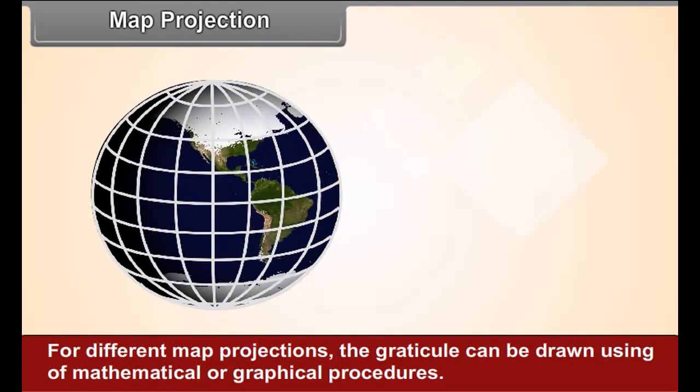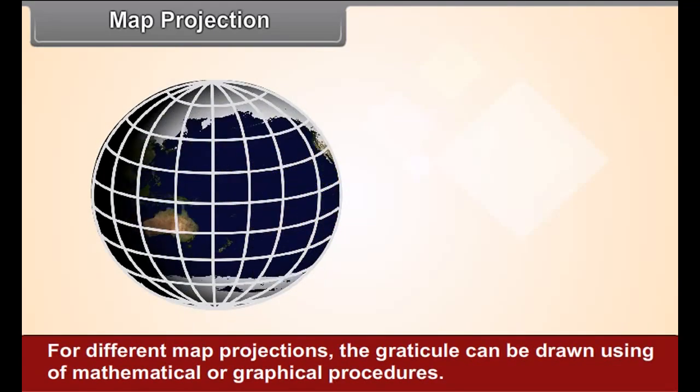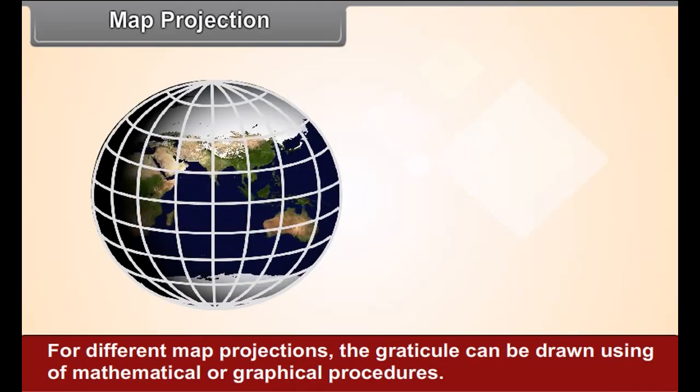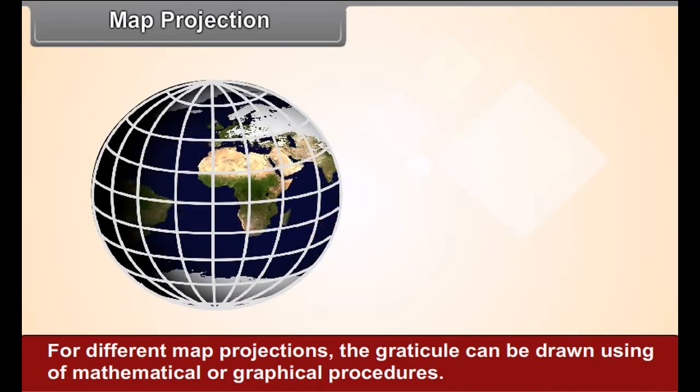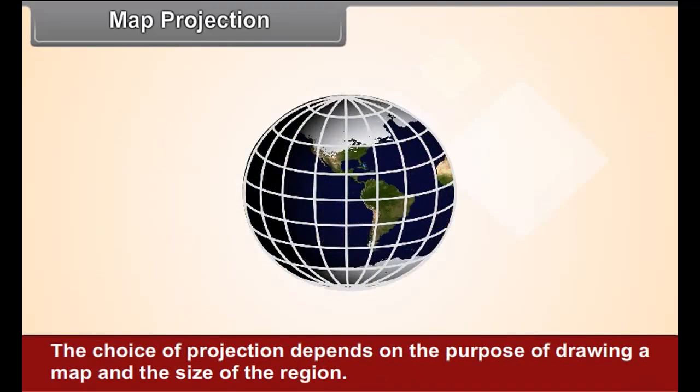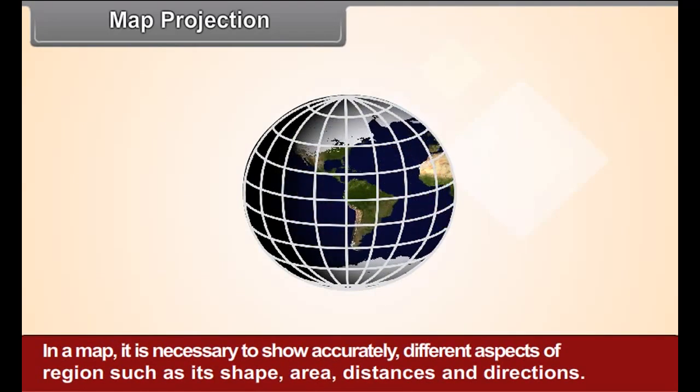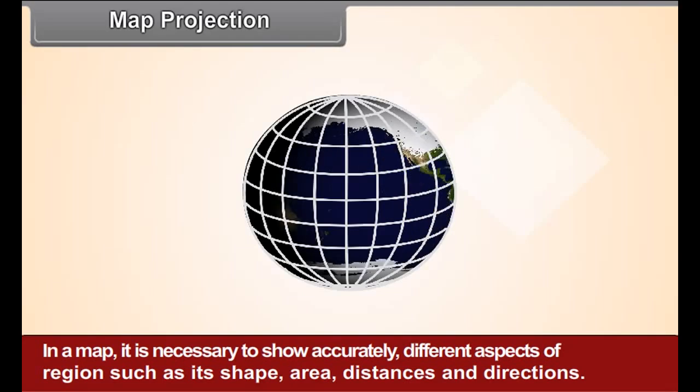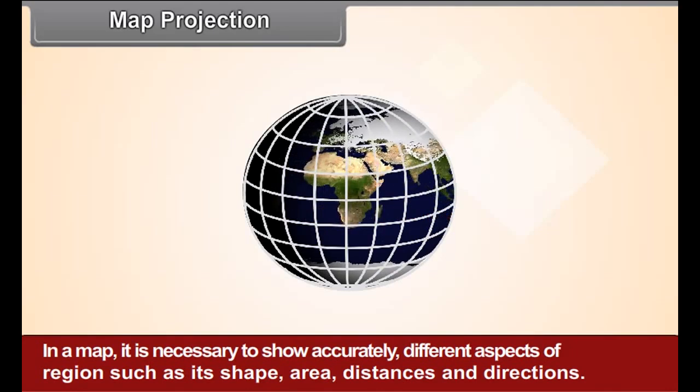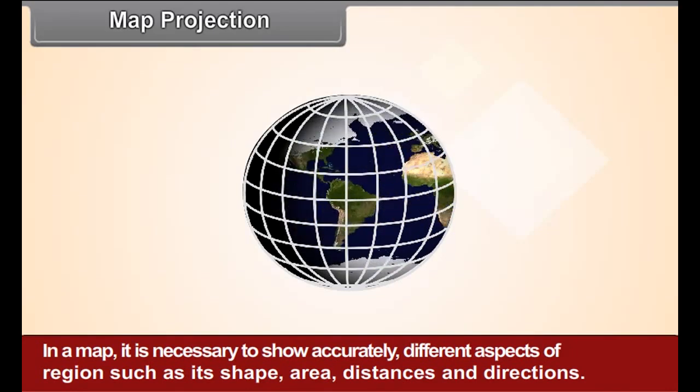For different map projections, the graticule can be drawn using mathematical or graphical procedures. The choice of a projection depends on the purpose of drawing a map and the size of the region. In a map, it is necessary to show accurately different aspects of a region such as its shape, area,